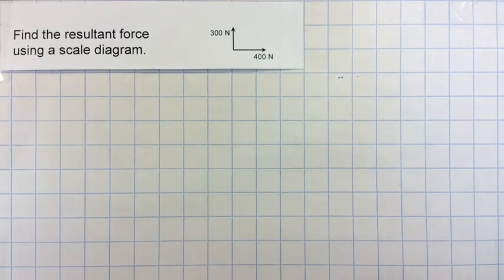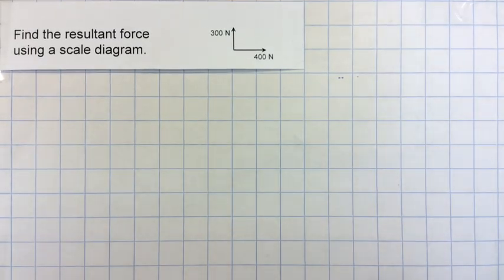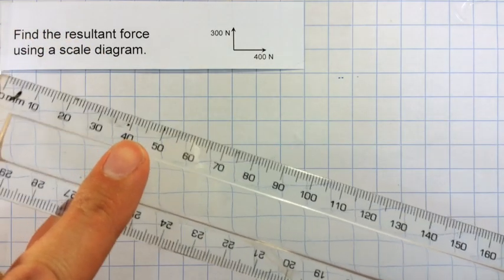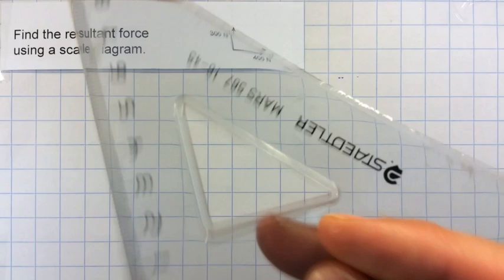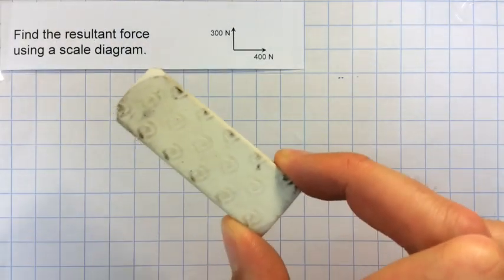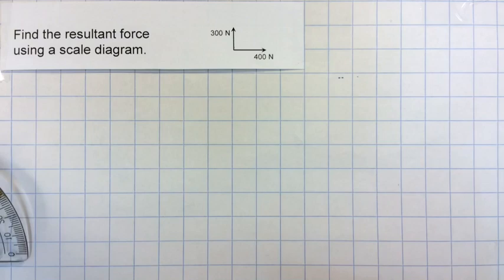In this video, we're going to look at how to find the resultant force using a scale diagram. You will need to have the following equipment: pencil, a ruler, and a set square. And if you think you might make a mistake, a rubber, and finally a protractor.